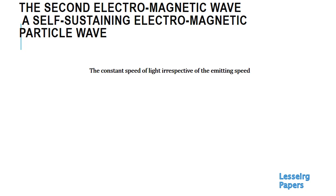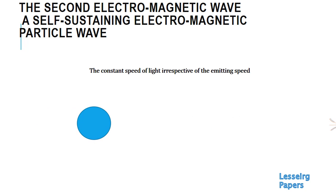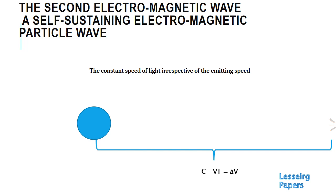As you can see from the animation, the blue ball is the particle and it emits a light beam. The particle has the velocity v1 and the light, of course, has the velocity c. So c minus v1 would then be the delta v. But as you can see, the light would always have the velocity c — it never adds together.